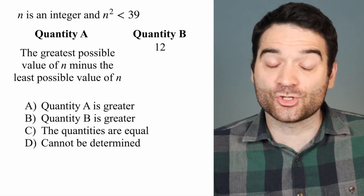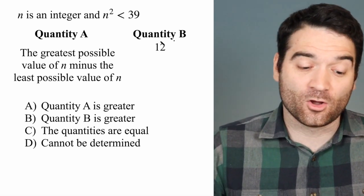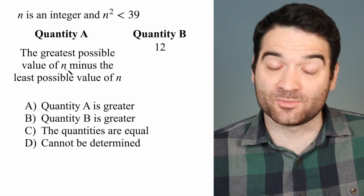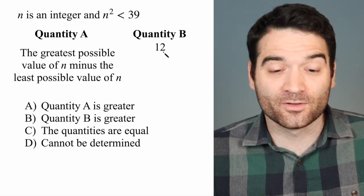We're told that n is an integer and n² is less than 39. We want to know what's greater: Quantity A, the greatest possible value of n minus the least possible value of n, or Quantity B, which is 12.